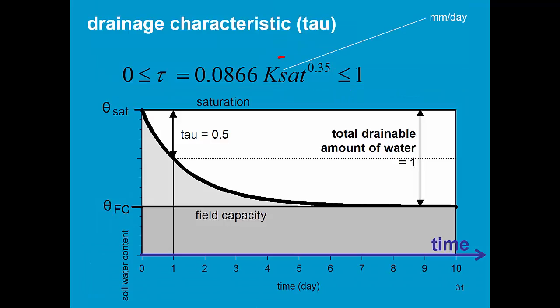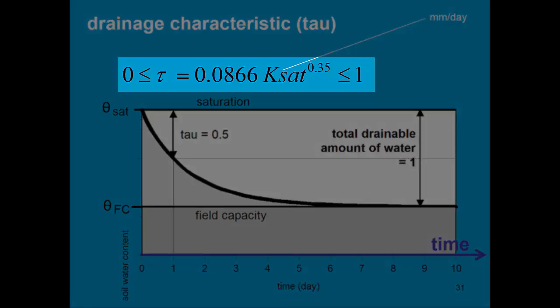From the Ksat value, AquaCrop derives a drainage characteristic, tau, with this equation.